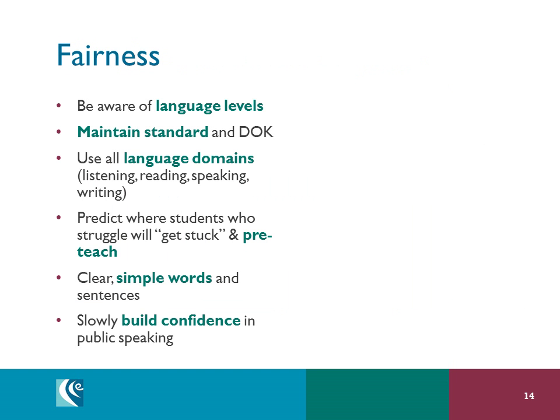The fifth step in the validation process is fairness. We include fairness to ensure that students are given the best shot at showing what they know in an assessment. It is important to know kids well — where they are in their language levels, what they can do with language, where they get stuck, and what is each kid's growing edge. Being mindful that as we make language more accessible to kids, we're not changing the level of rigor.